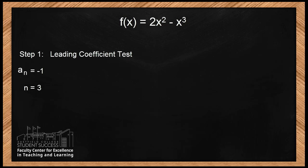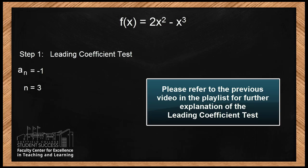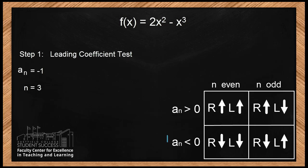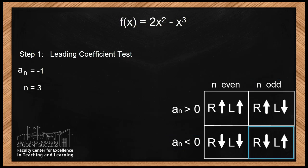When looking at the leading coefficient test, remember to learn the name of the theorem as well as the rule, because it tells you when to use it. In our case, the leading coefficient is negative and n is odd. Hence, the right end will point down and the left end will point up. So now we've answered Part A of the problem.